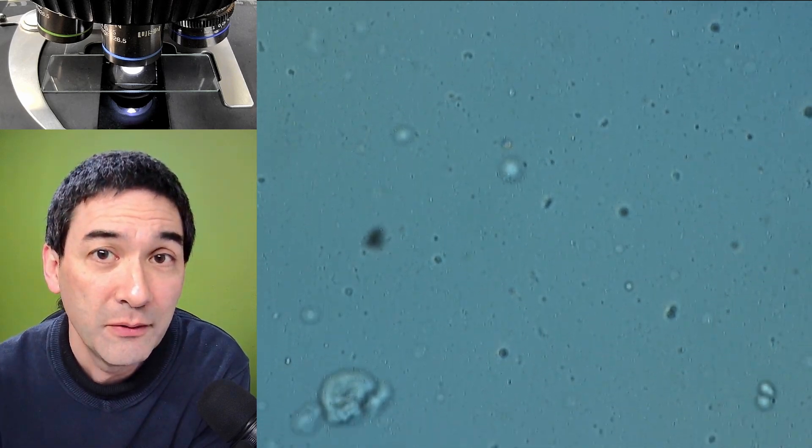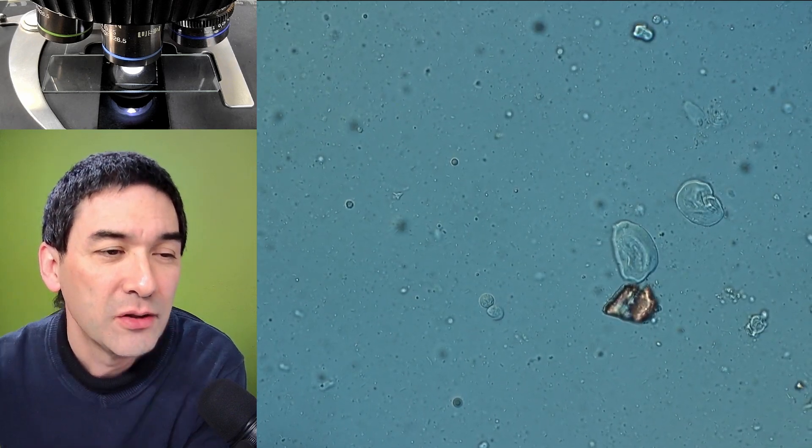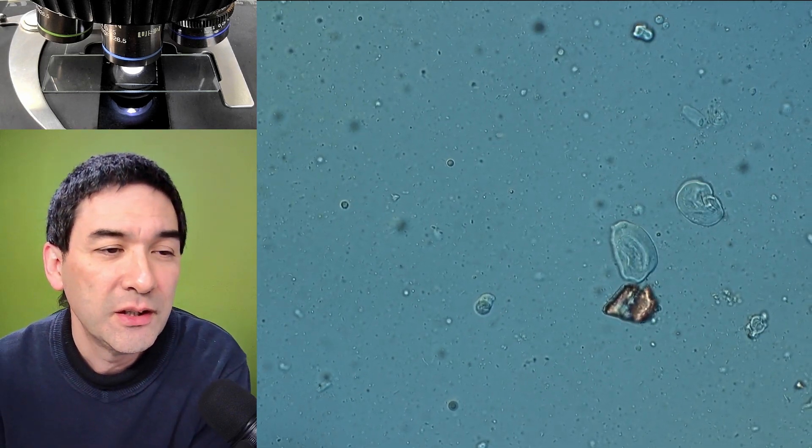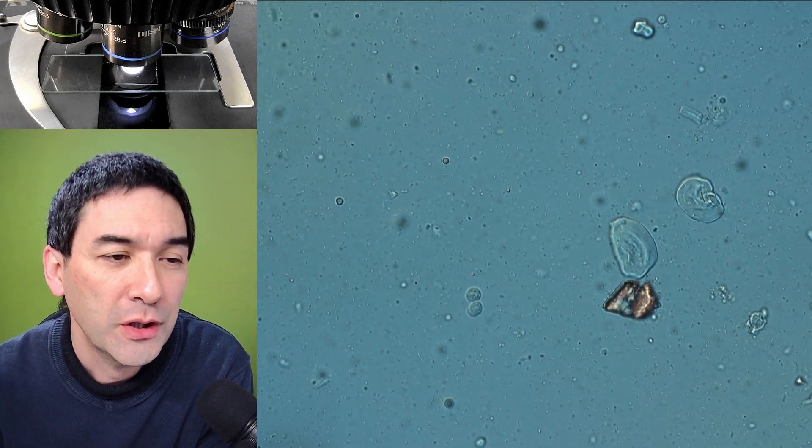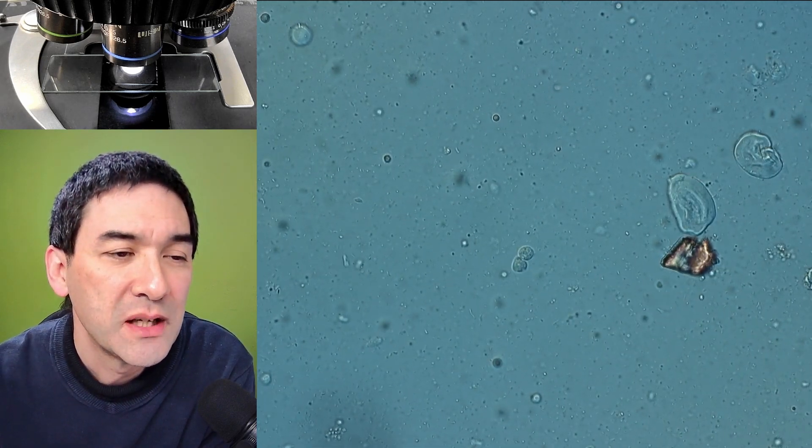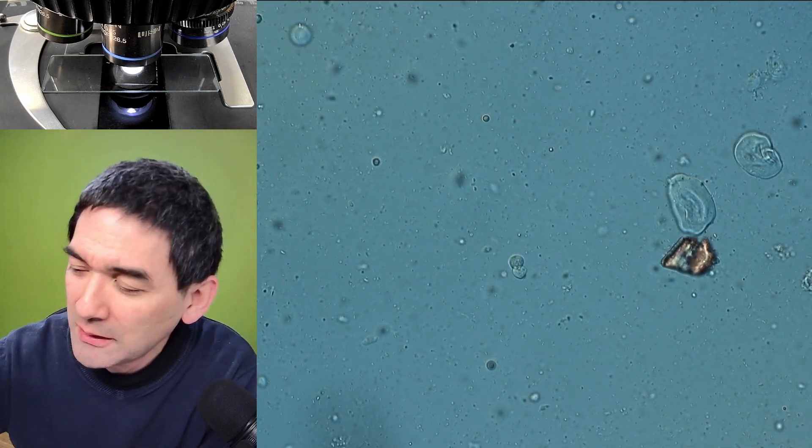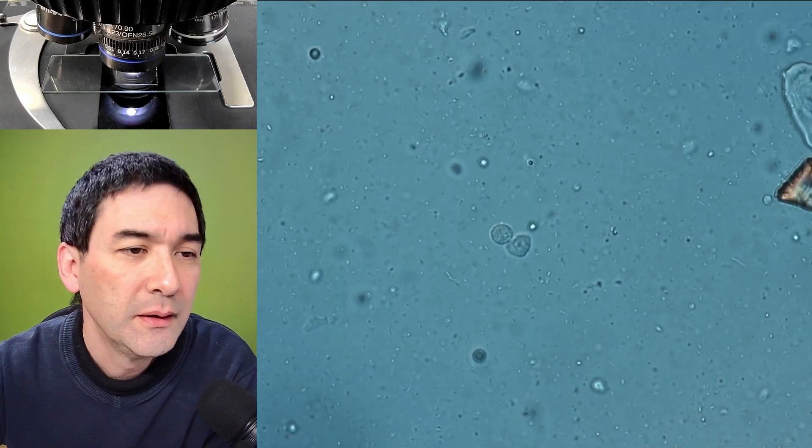These in the center right now are not bacteria—they look much larger. It could be either ciliates or flagellates. Those two cells here in the center are way too large for bacteria. But let's zoom in a little bit more. Look at this here.